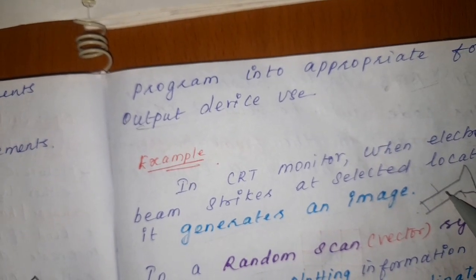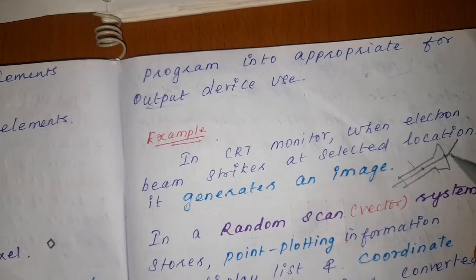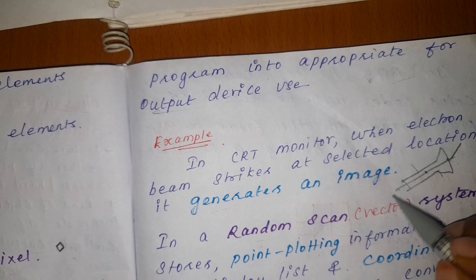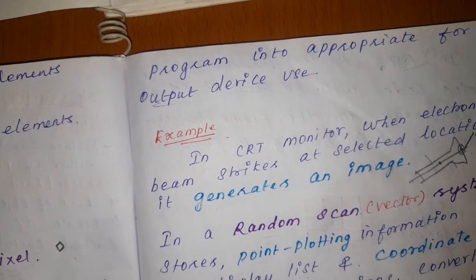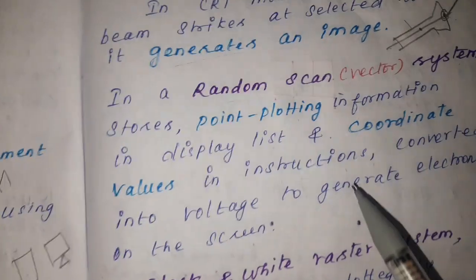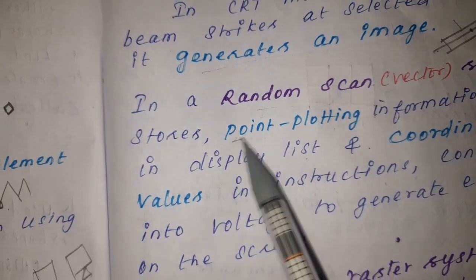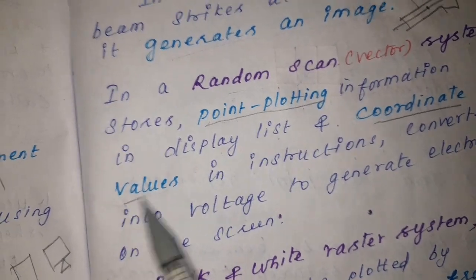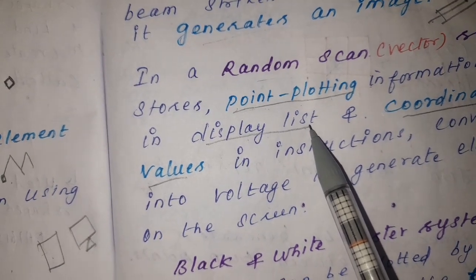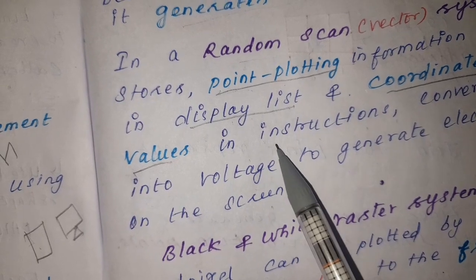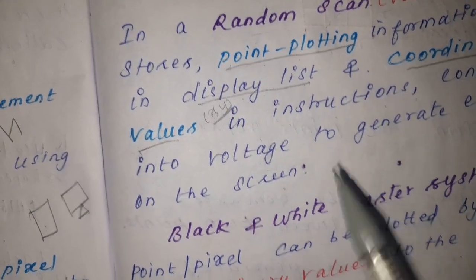In a CRT monitor, when an electron strikes at some point it emits an image, which is known as a point. When the electron passes on the CRT scan and locates at a position, that generates an image known as a point. In a random scan vector system, it stores two pieces of information: plotting point information, used to display the display list, and coordinate value, which contains x and y values converted into voltage to generate an electron beam on screen.